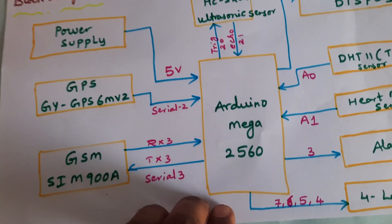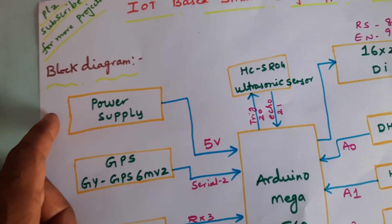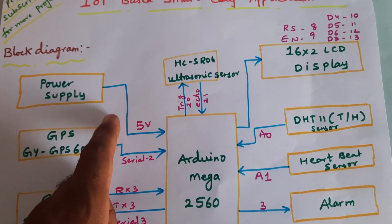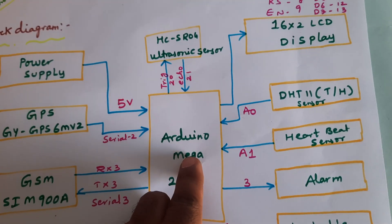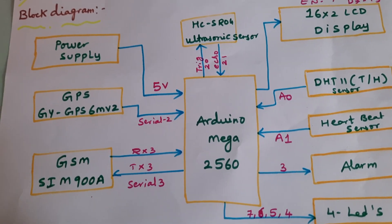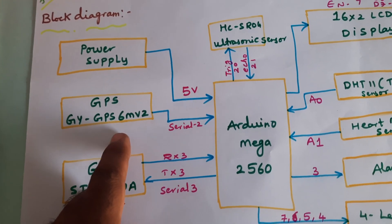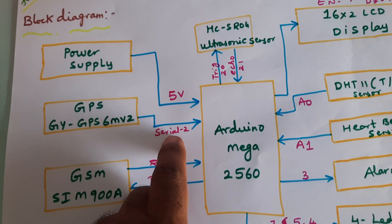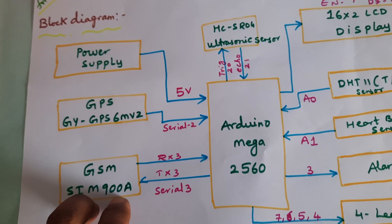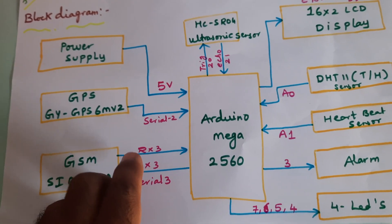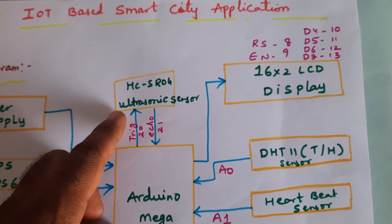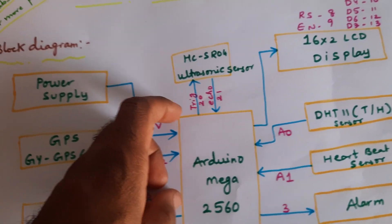We are using a 9-volt adapter as the power input source and converting it into 5-volt DC power supply, which is given to the Arduino Mega 2560. This board has four serial communications, which is why we selected it. One GPS module is connected to serial communication 2, and the GSM SIM900A with GPRS internet is enabled on the SIM card.